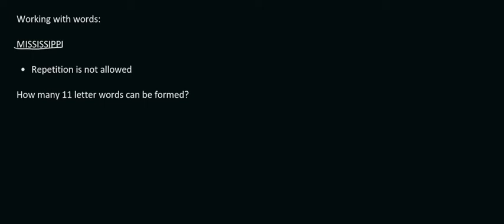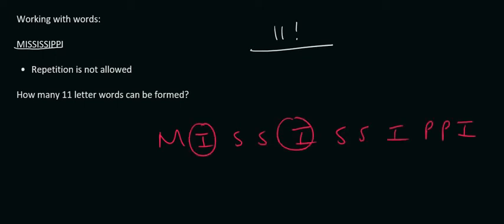So we know that, and I'm going to start speeding up the process now, we know that there are 11 letters, so we can say 11 factorial. Then we divide by all the repeating letters, okay, so let's look at that carefully. We can see that there are four I's, there we go, so that will be four factorial.